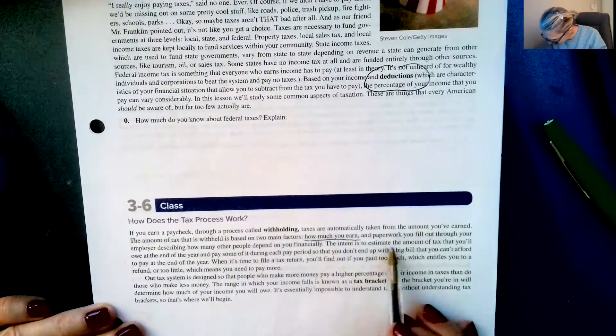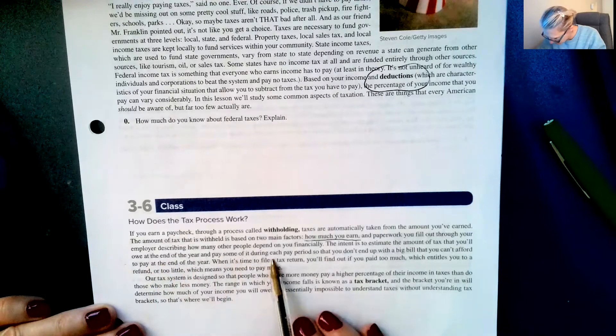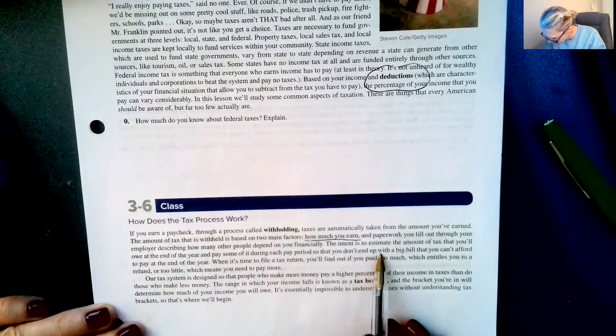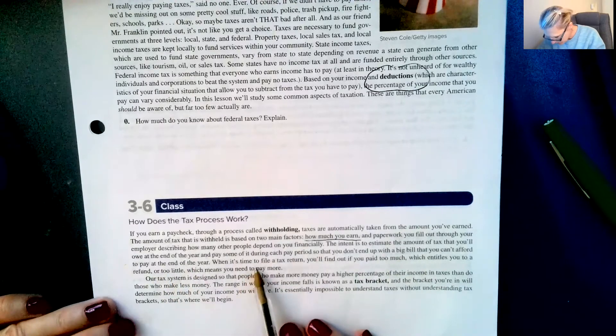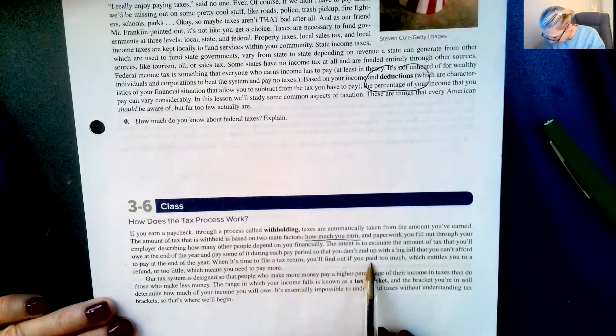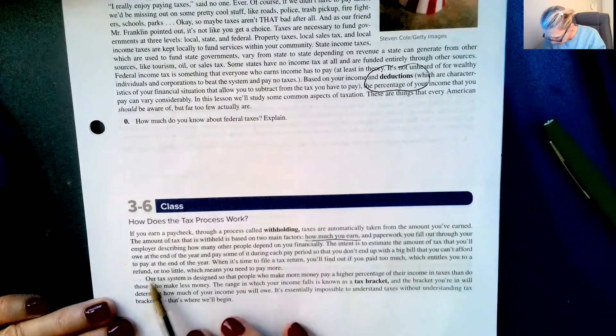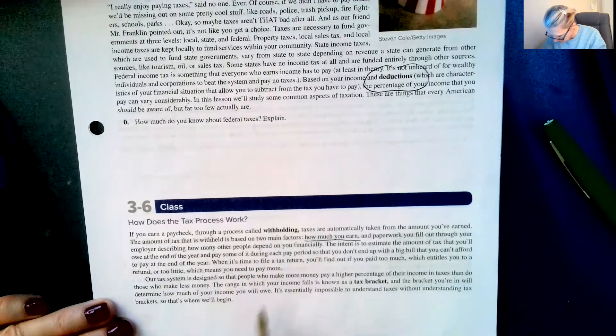The intent is to estimate the amount of tax that you owe at the end of the year and pay some of it during each pay period so that you don't end up with a big bill that you can't afford to pay at the end of the year. When it's time to file a tax return you'll find out if you pay too much, which entitles you to a refund, or too little, which means you need to pay more.